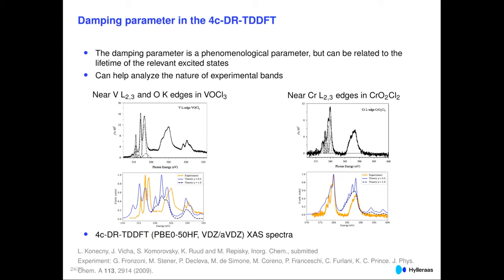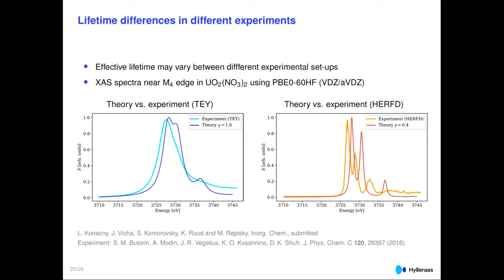Running a bit short on time: depending on the kind of experiment, you have different resolution and different lifetimes. We can model this in our calculations by changing the damping parameter, getting very good agreement for the uranium complex with experimental data — again with no shift applied to the onset. Very good agreement with experiment.